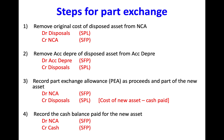The third step is to record the part exchange allowance as proceeds and part of a new asset. You debit the non-current asset and credit your disposals account. If the figure is not given to you, calculate it by taking the cost of the new asset minus the cash you have paid. The fourth step is to record the cash balance paid for the new asset: debit non-current assets and credit cash.